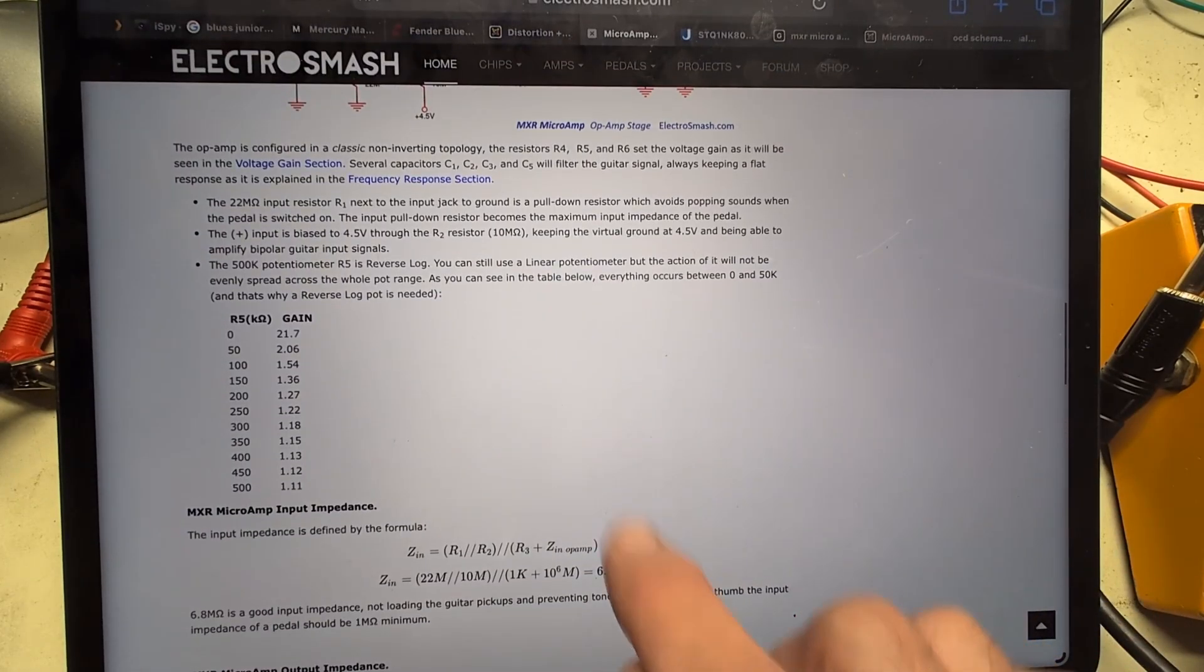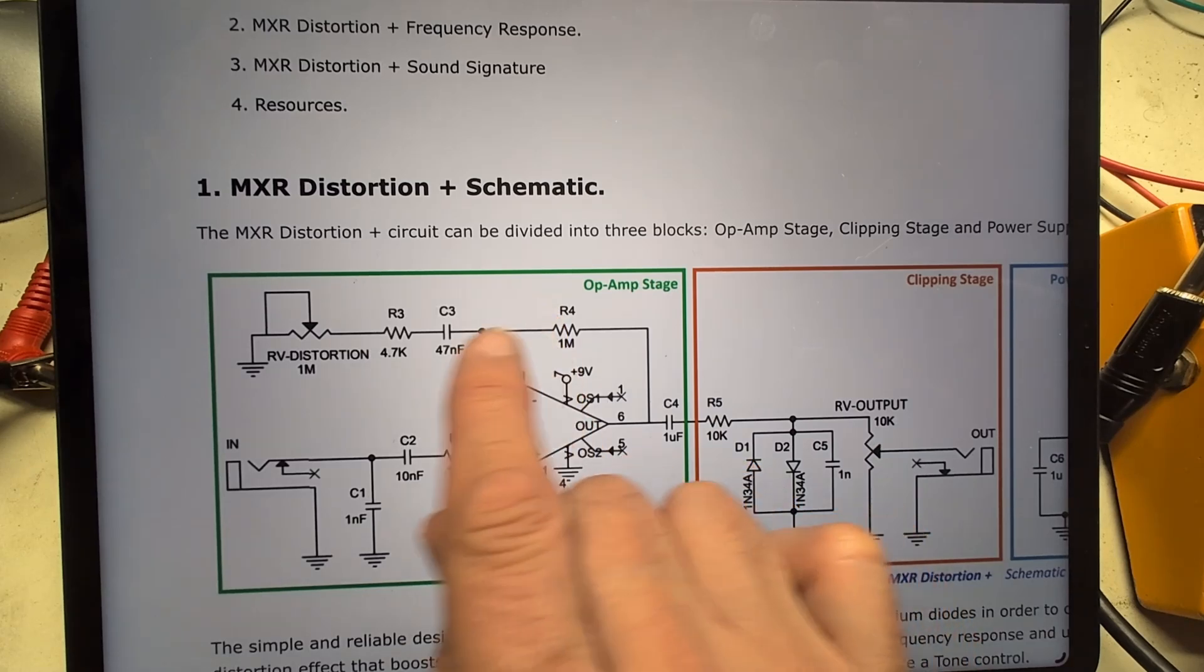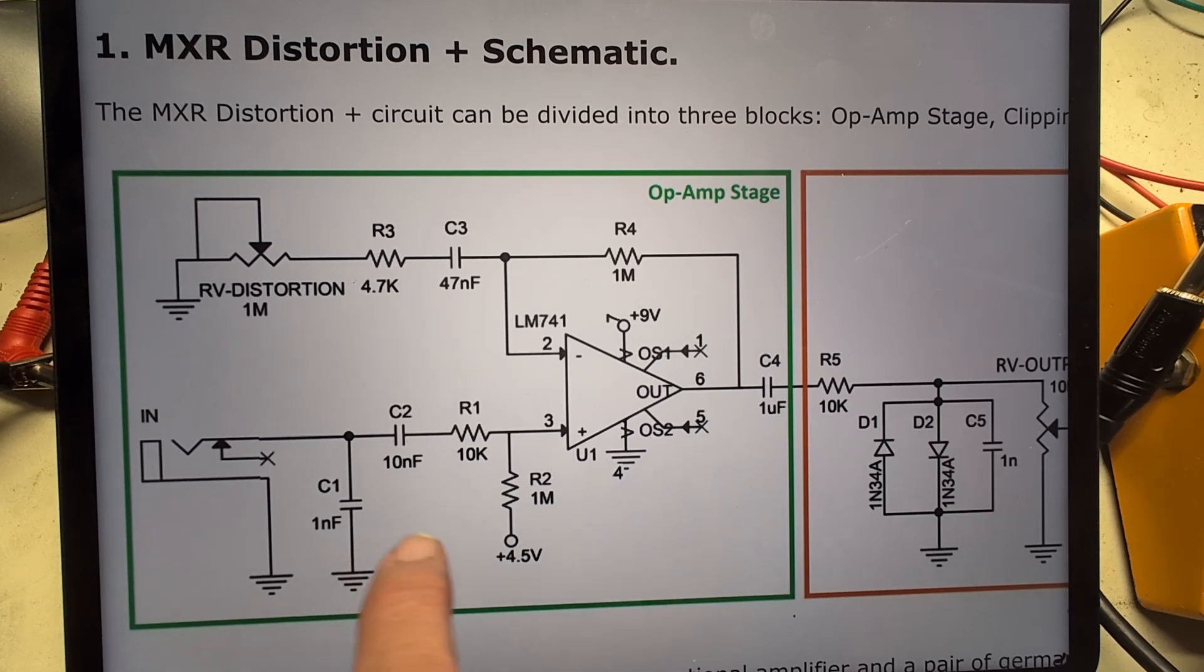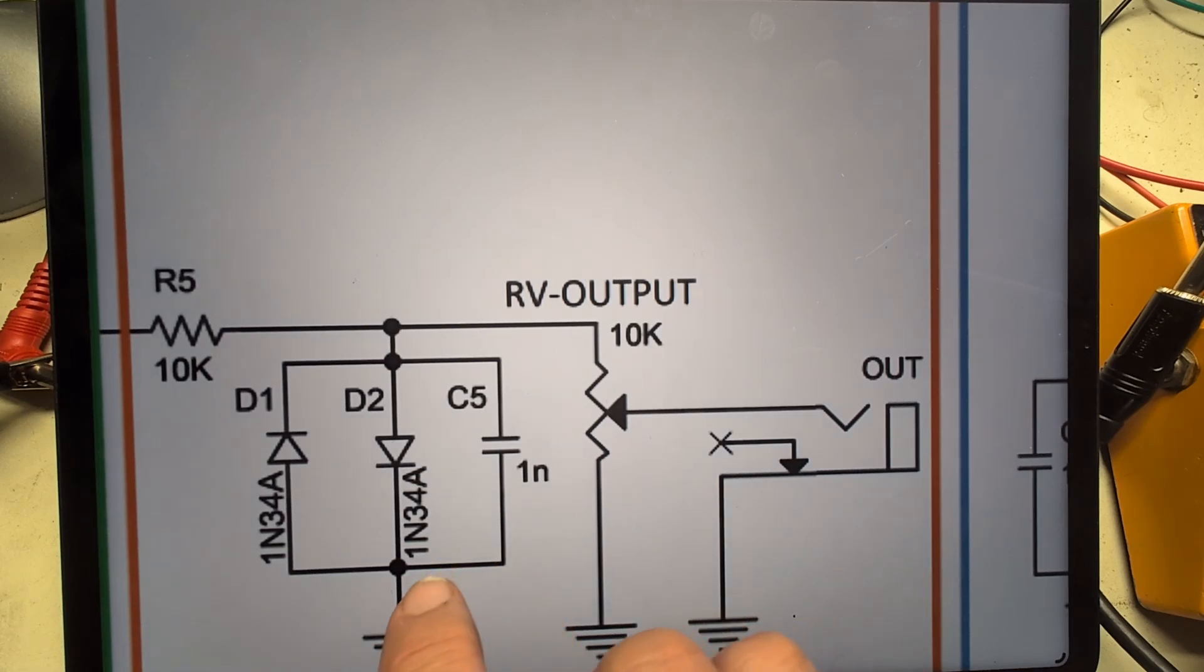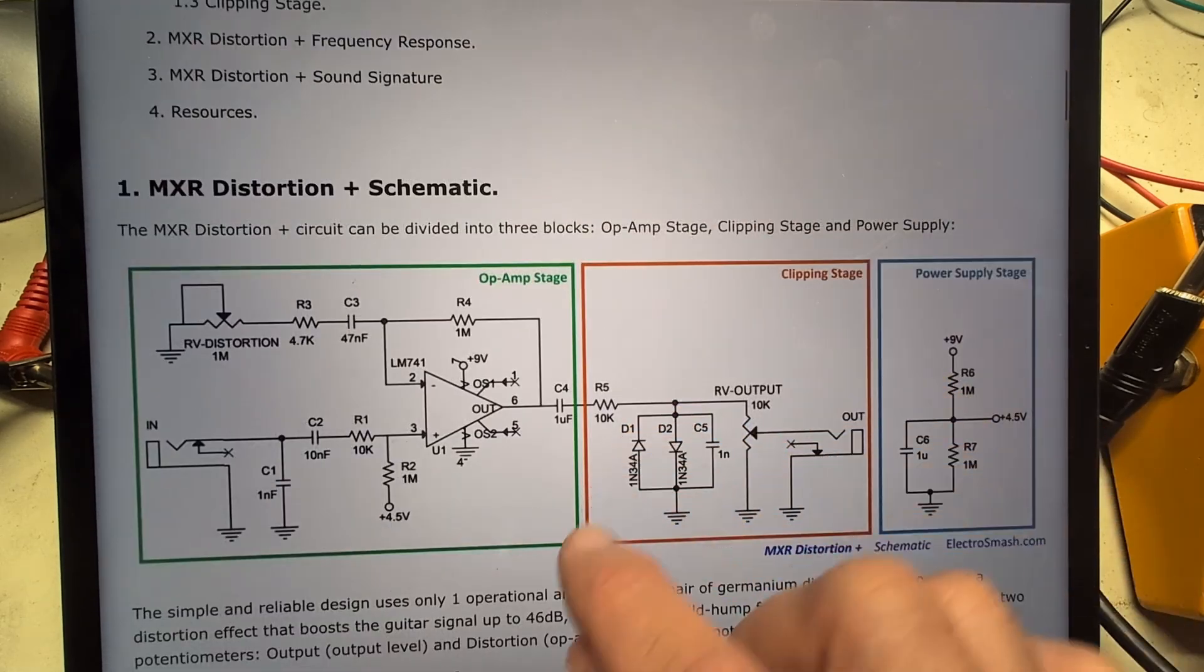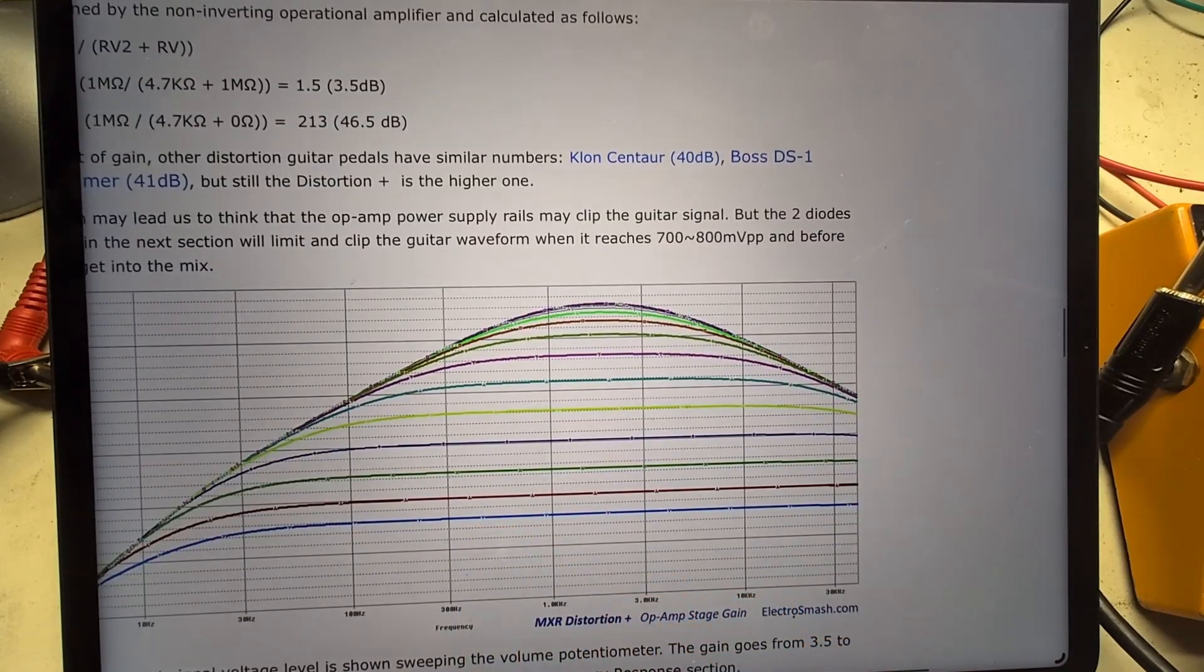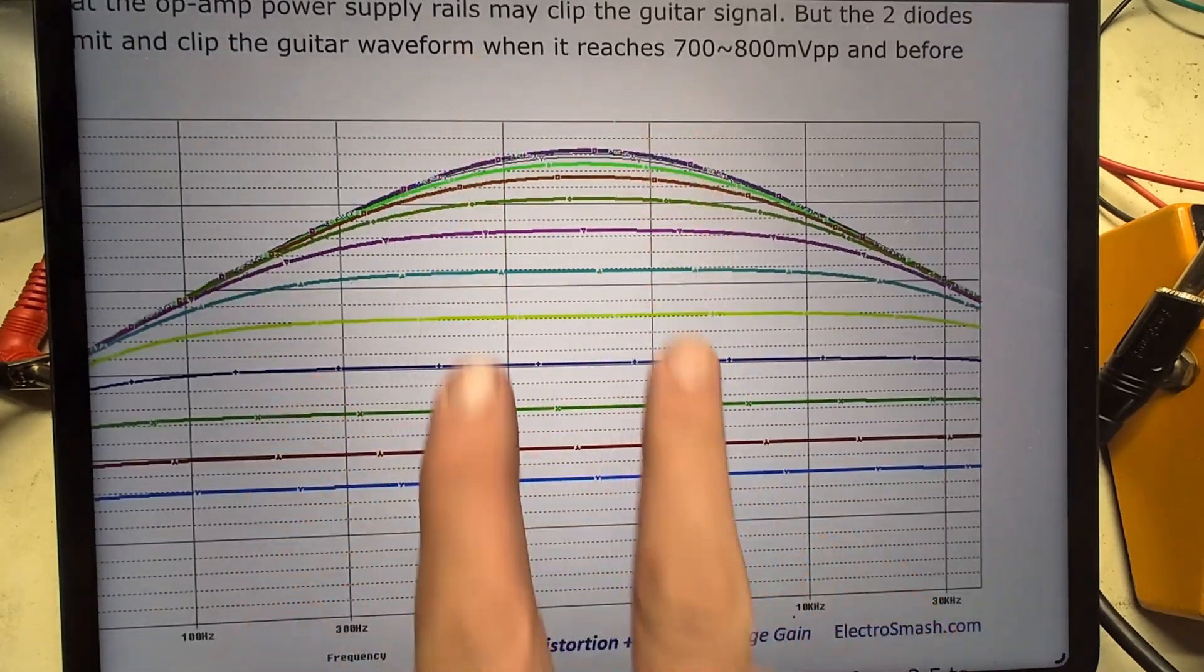Now if we compare that to the Distortion Plus, the schematic here is similar. Gain set by these two. The gain is more like 200 as opposed to 25 on this. And we have a small value here which means the low frequencies are attenuated. And then we have another value here going to ground, and that means some of the high frequencies are attenuated. And then of course this has a clipping stage as well.